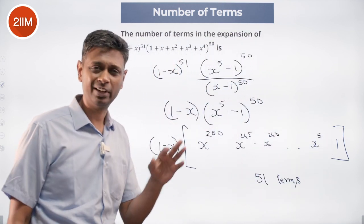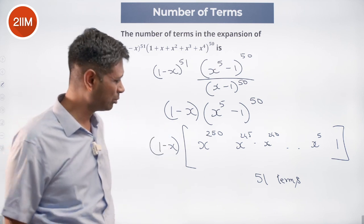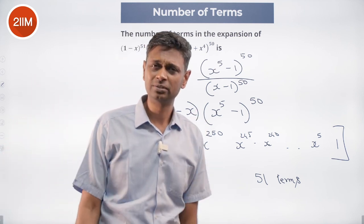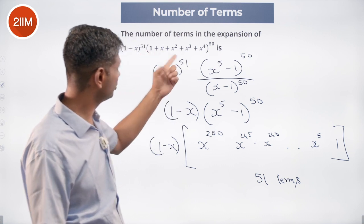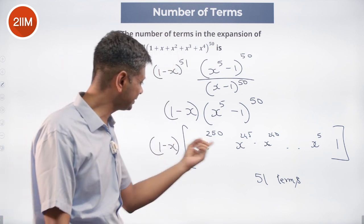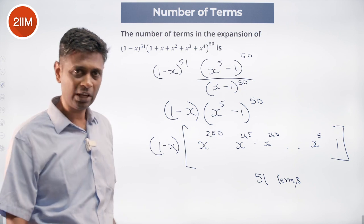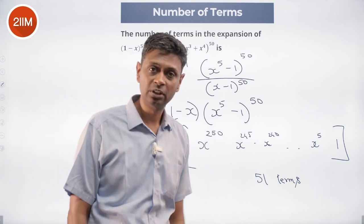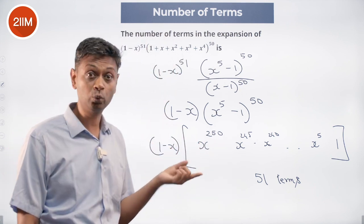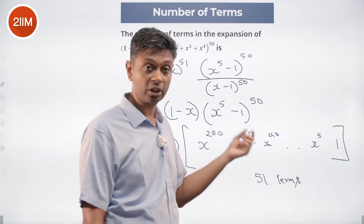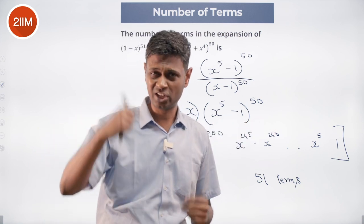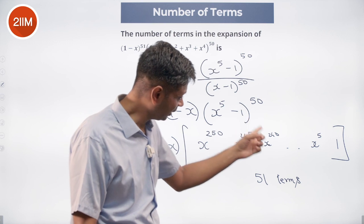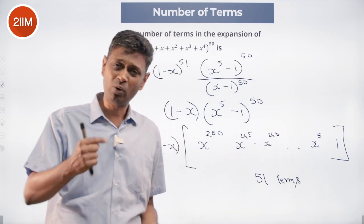It will be plus and minus alternately. I don't care about the value, I don't care about the coefficient. All I want to know is how many terms will be there. The 1 term will have all x power 250, 245. I multiply by x, I'll have x power 251, x power 246, x power 241, one additional x.